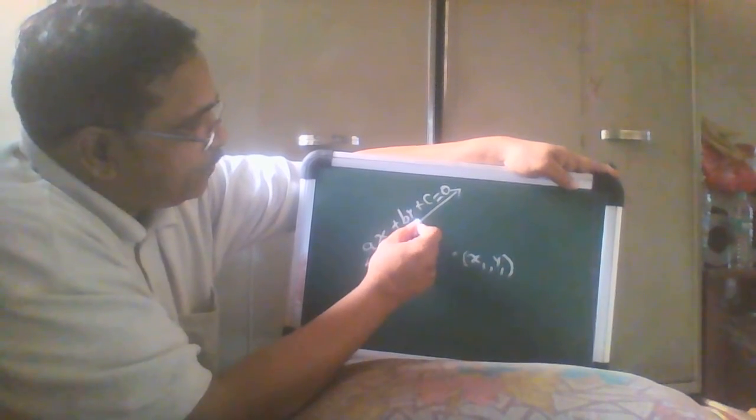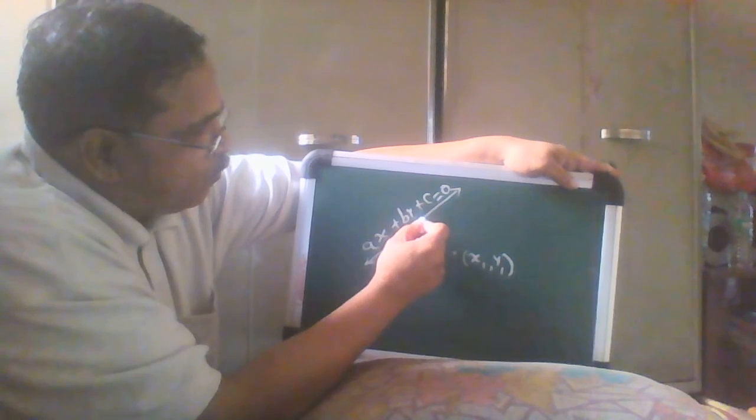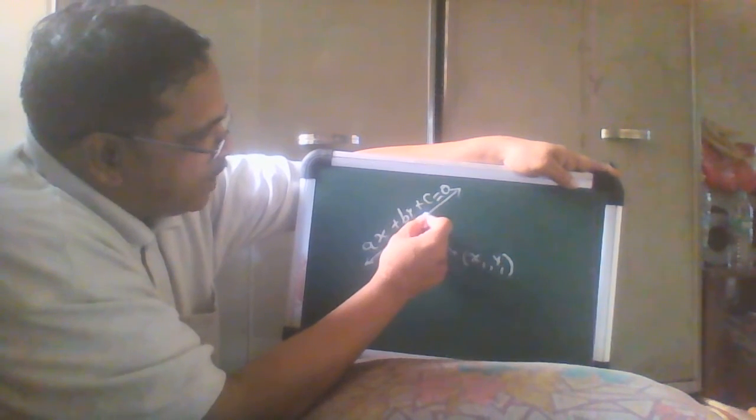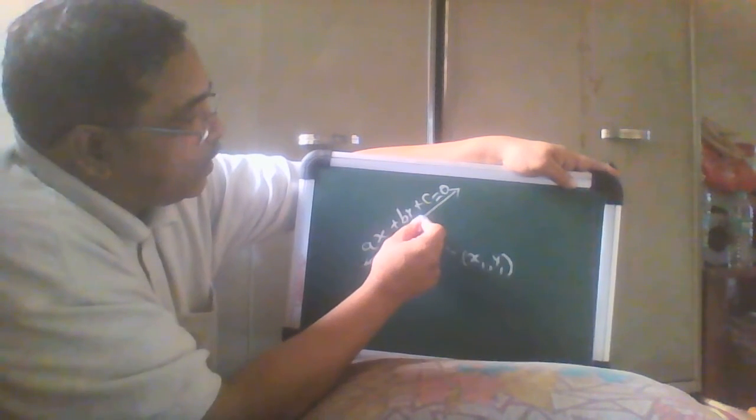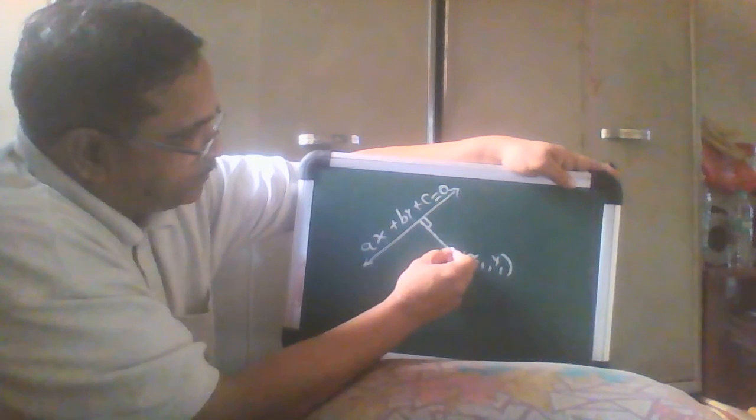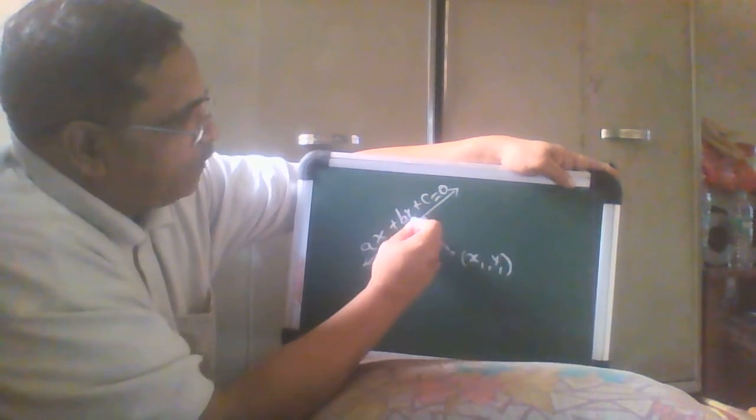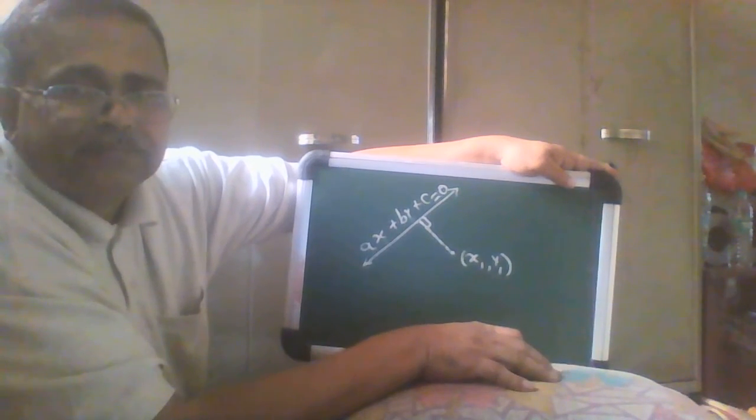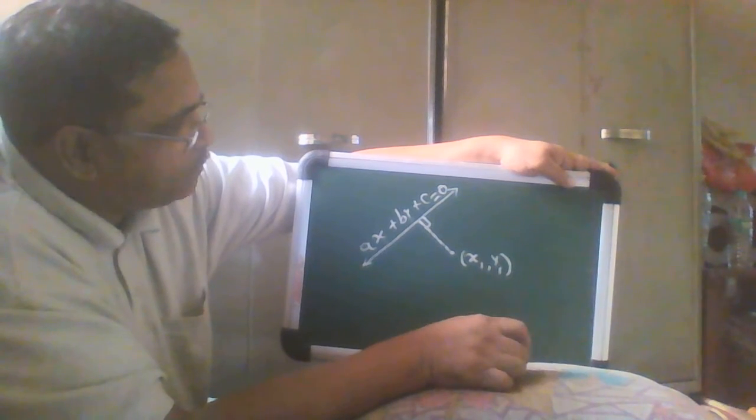First of all, beginners get confused what is exactly distance of a point from a line. You have to make sure that it is perpendicular distance, so this is the length of this segment. We don't know, we want to. So how we will do that?